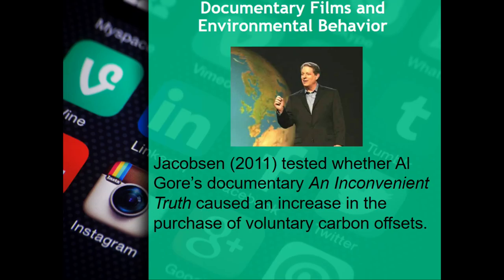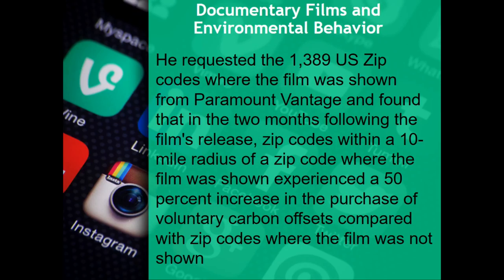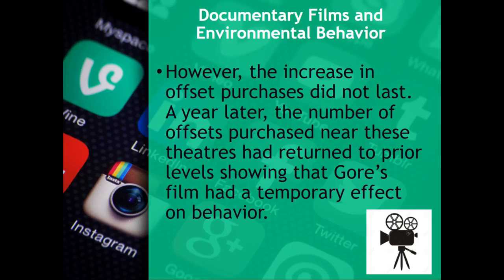Jacobson (2011) tested whether Al Gore's documentary An Inconvenient Truth caused an increase in the purchase of voluntary carbon offsets. However, the increase in offset purchases did not last. A year later, the number of offsets purchased near these theaters had returned to prior levels, showing that Gore's film had only a temporary effect on behavior.